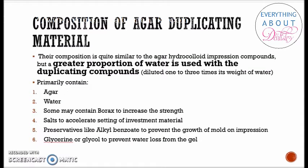The composition of the commonly used agar duplicating material is very similar to agar hydrocolloid impression materials, but a greater proportion of water is used — it is diluted one to three times its weight in water. It primarily contains agar and water. Borax is added to increase strength. Salts are added to accelerate the setting of the investment material poured into the impression. Preservatives are added to prevent mold growth, and glycerin or glycol is added to prevent water loss from the gel.